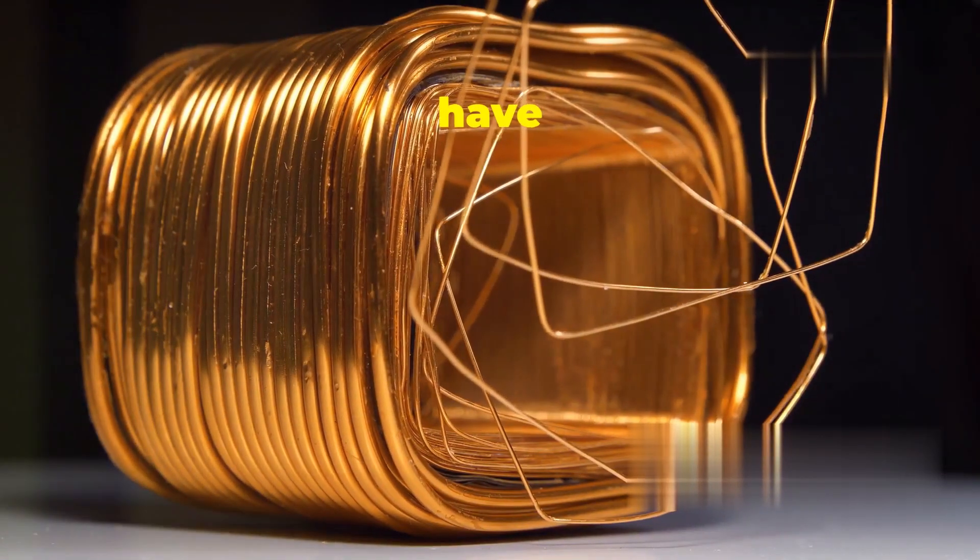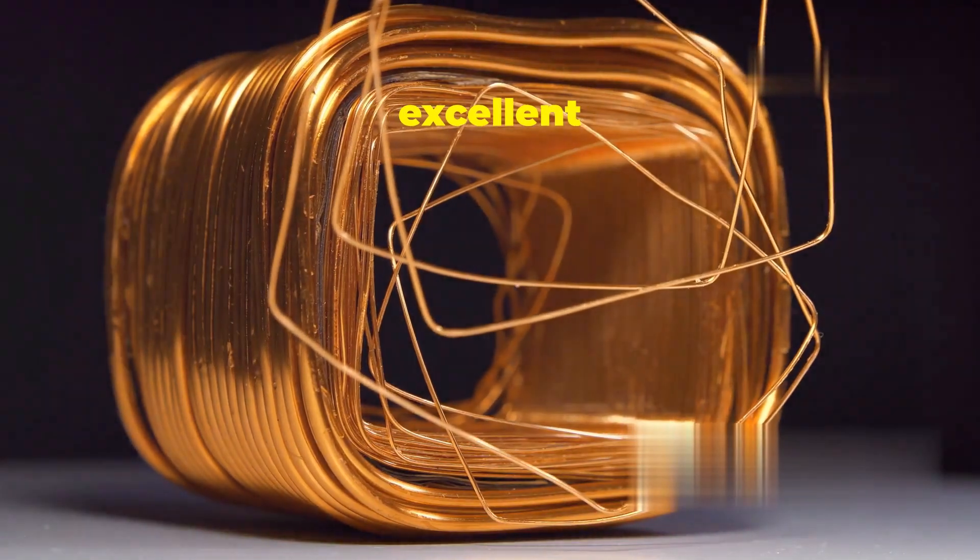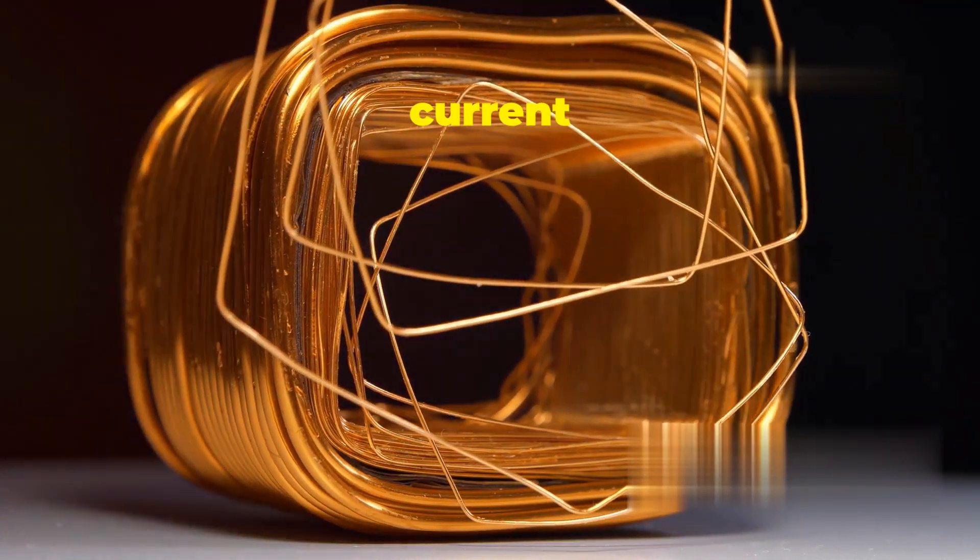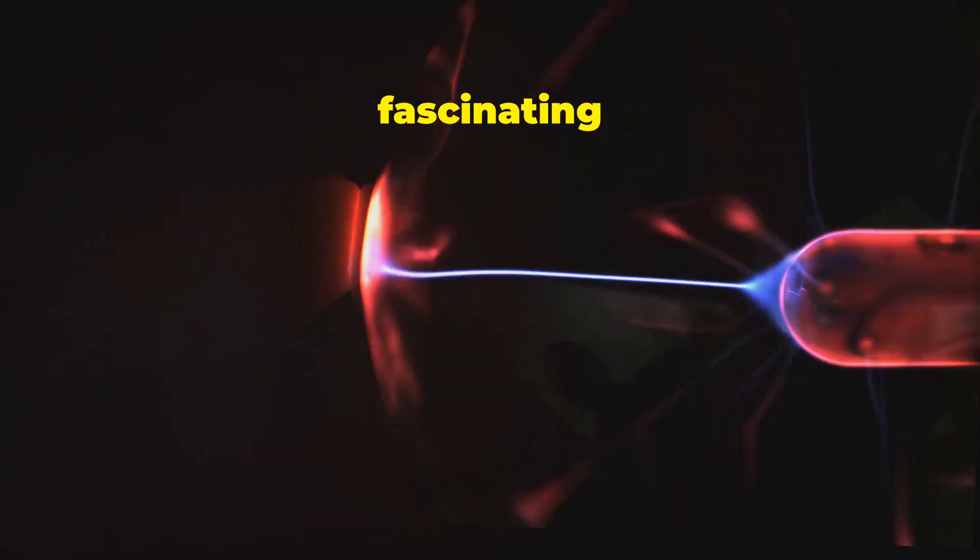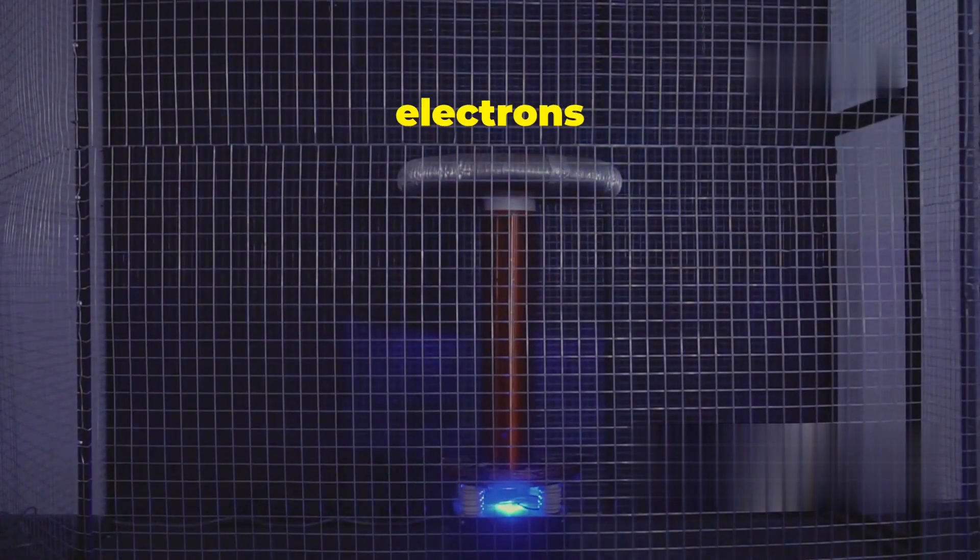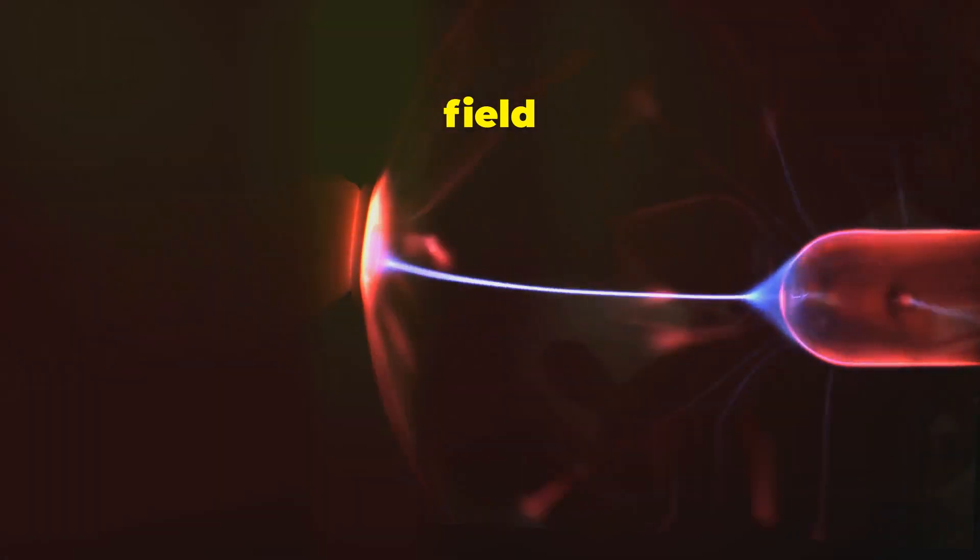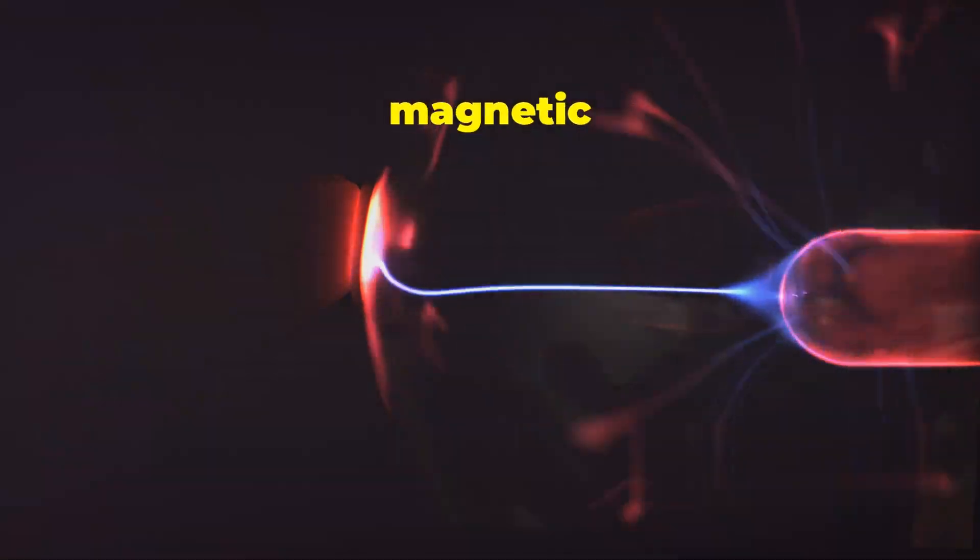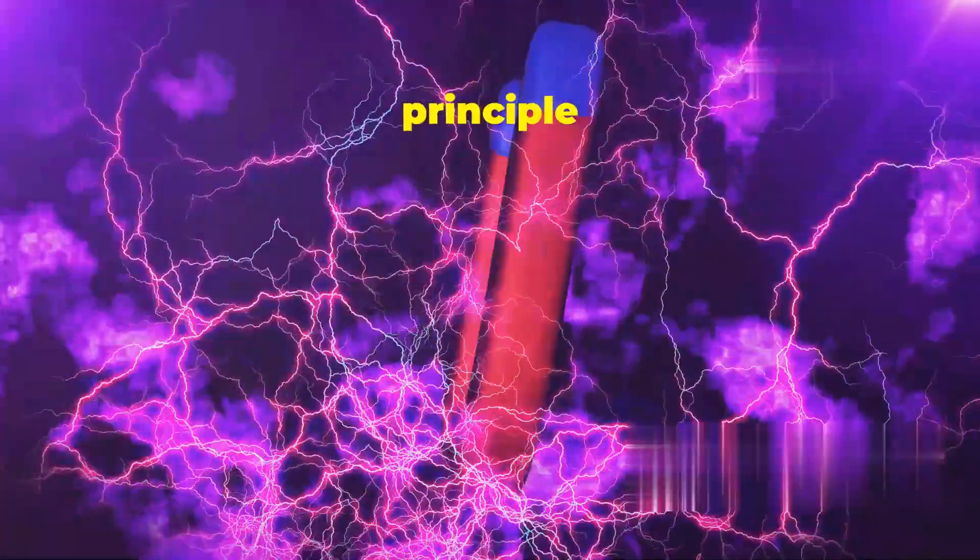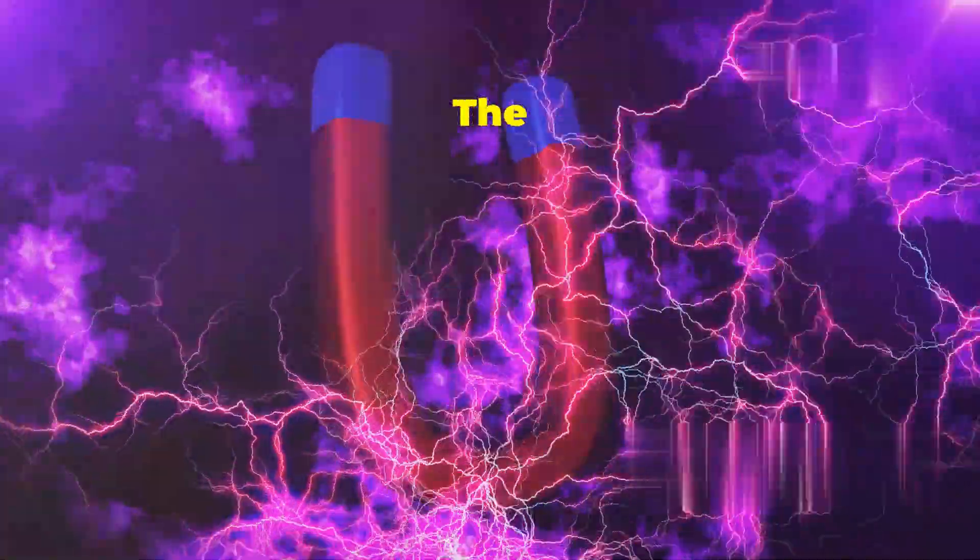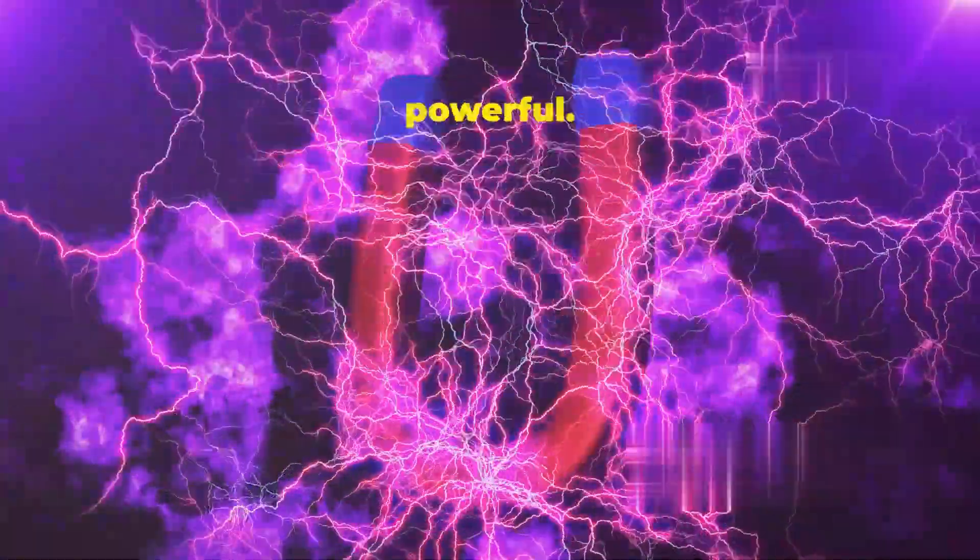First up, we have the wire coil, often made of copper. Copper is used because it is an excellent conductor of electricity, allowing current to flow easily. When an electric current flows through this wire, something fascinating happens: the movement of electrons through the wire generates a magnetic field. This magnetic field is the key to the electromagnet's functionality. This is a fundamental principle of electromagnetism. The relationship between electricity and magnetism is what makes electromagnets so powerful.